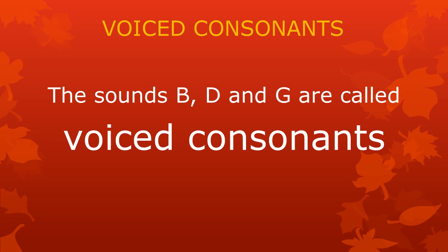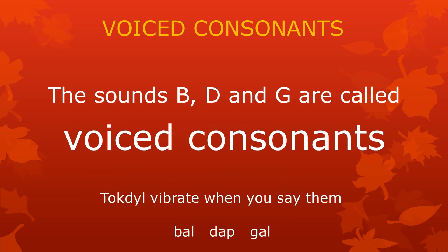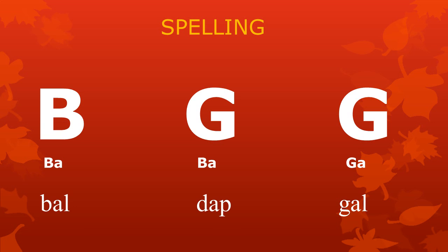The sounds b, d, and g are called voiced consonants because when you say them, your vocal cords vibrate. You can feel the vibrations by putting your hand on your throat when you pronounce the words bal, dab, and gal. The voiced consonants are spelled with the letters b, d, and g as in the words bal, dab, and gal.